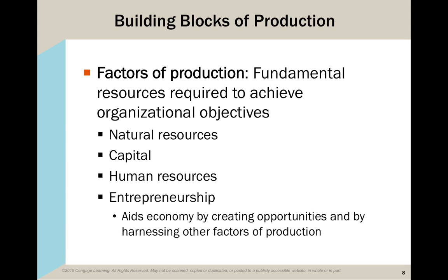Both businesses and nonprofits depend on what we call factors of production to achieve their objectives. These factors help the economic system function and create wealth. Some of these factors are: natural resources — land, fresh water, wind, mineral deposits — whose value tends to rise with high demand or low supply; capital — machines, tools, buildings, information technology — noting that capital in this sense does not include money, though companies need money to acquire and maintain their capital; and human resources — the physical, intellectual, and creative inputs of all people who work within an economy.